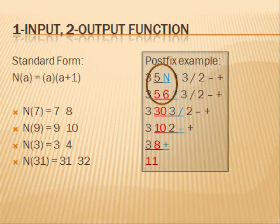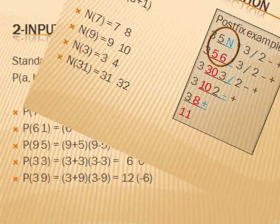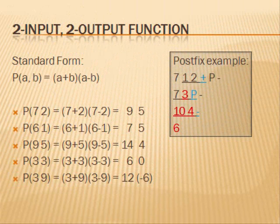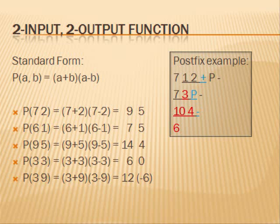In the postfix example, the 5 is inputted into n to give 5, 6. Here, I define a two-input, two-output function named p. The first output of p of a, b is a plus b. The second output is a minus b. Therefore, p of 7, 2 is 7 plus 2, 7 minus 2. 7 plus 2 is 9, and 7 minus 2 is 5. In the postfix example, 7 and 3 are inputted into the function p to produce 10 and 4.